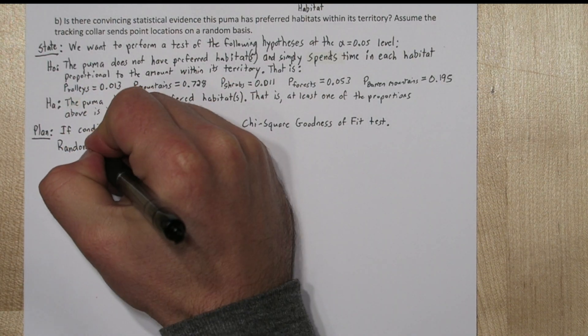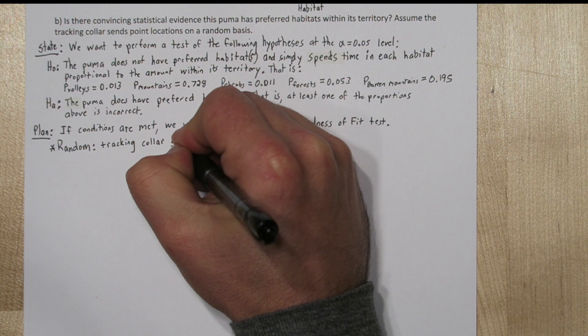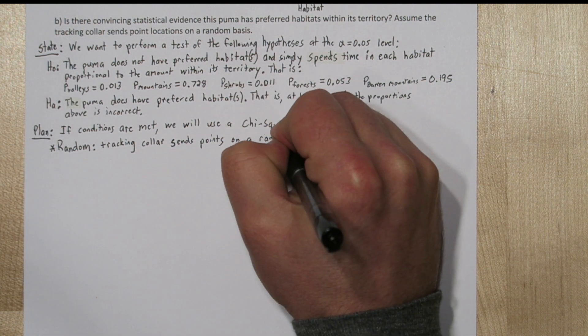The first condition is random. In the stem of the problem, we're told the tracking collar sends points on a random basis. So that condition is met.